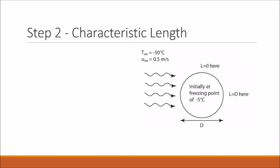The next step is to define our characteristic length L. This is a little tricky because the length over which the air flows varies along our paddy. At the edges we have L as zero, but in the middle we have L equal to the diameter, and on the other side we have zero again. So for this problem we're going to be assuming that L is equal to D.